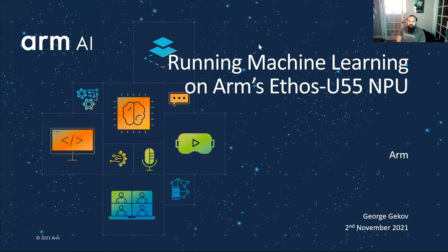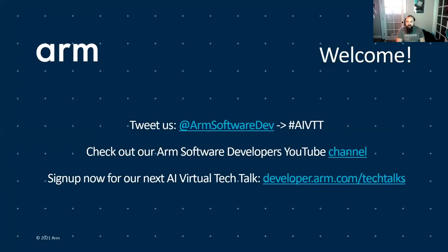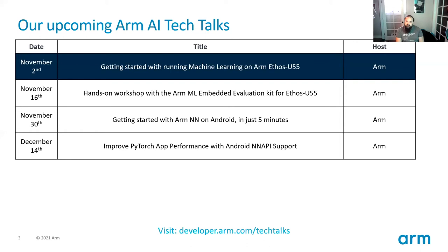Welcome to Arm AI Virtual Tech Talks. Today we're going to be learning about how to run machine learning on Arm's Ethos U55 NPU — some of the newest IP coming out of Arm. Tweet us at Arm Software Devs, hashtag AIVTT. Check out our Arm Software Developer YouTube channel and sign up for our next AI Virtual Tech Talk at developer.arm.com/tech-talks.